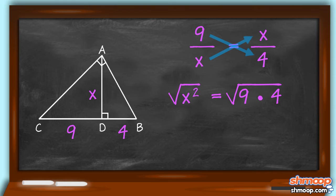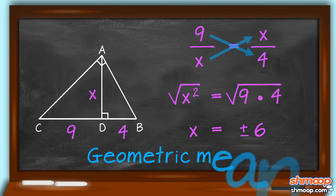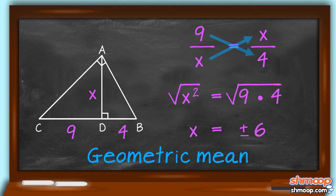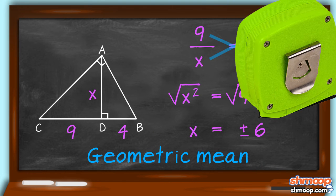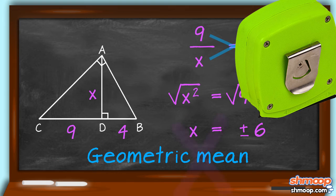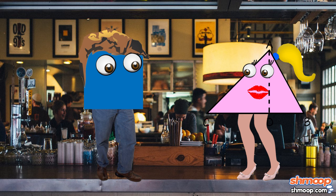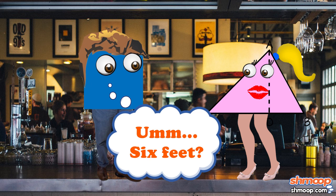Take the square root of both sides and we get plus or minus 6. And there we go — it's the geometric mean. Since ABC can't have a negative height, we take the positive answer only. So her height is 6 feet.